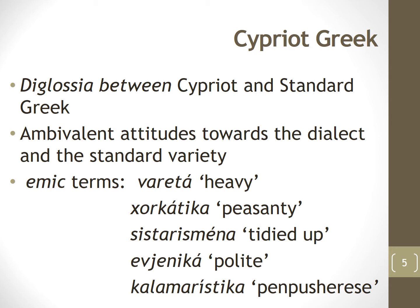By way of introduction, Cypriot is a dialect of Greek spoken in Cyprus, belonging to the same dialect family as the dialects of the Dodecanese — Rhodes, Kos, Chios, etc. There is diglossia between Cypriot and Standard Greek. Standard Greek is the H variety in Fergusonian terms — the language of education and the public domain — whereas Cypriot is the language of the home, acquired naturally, while Standard Greek is exogenous, acquired through formal schooling.